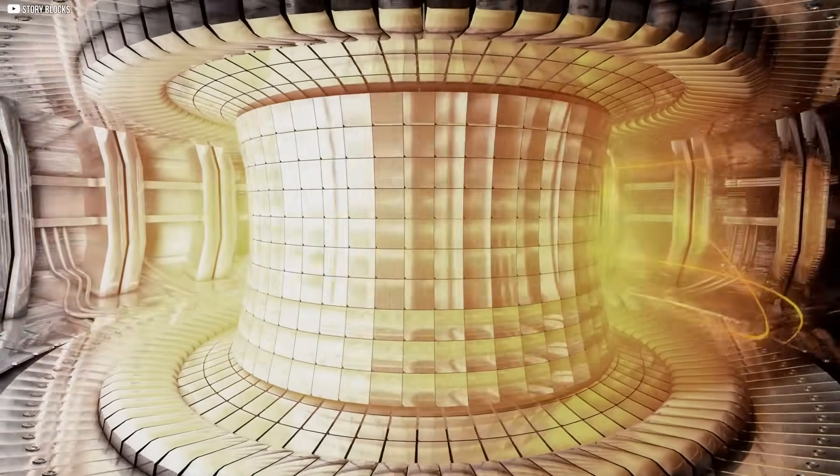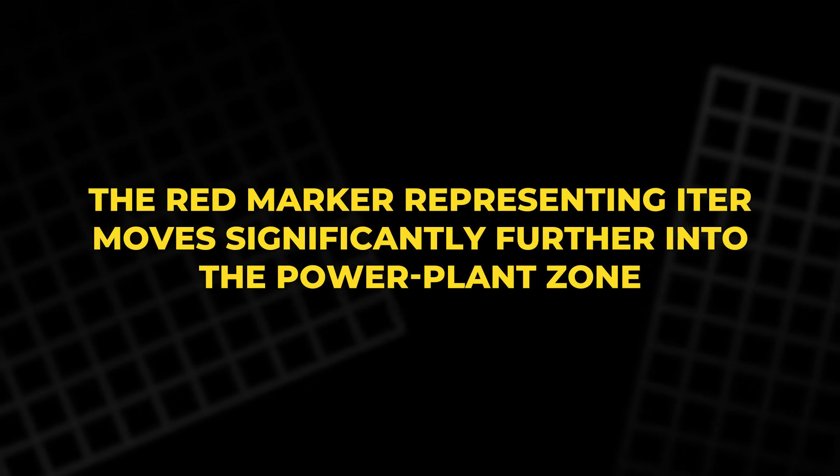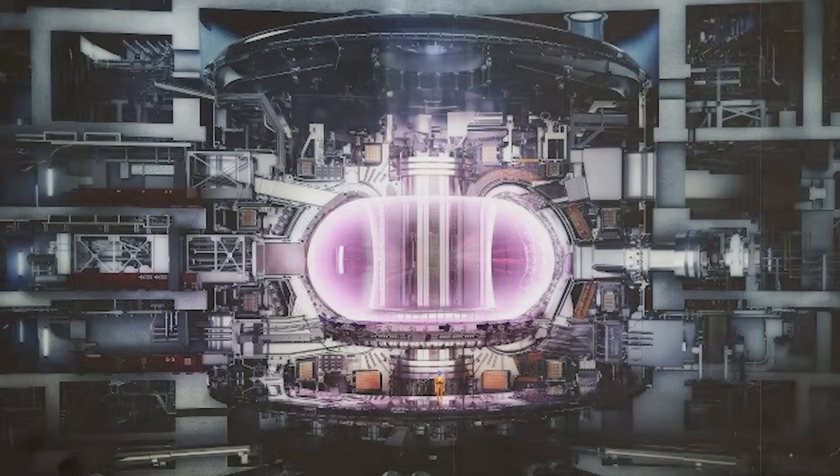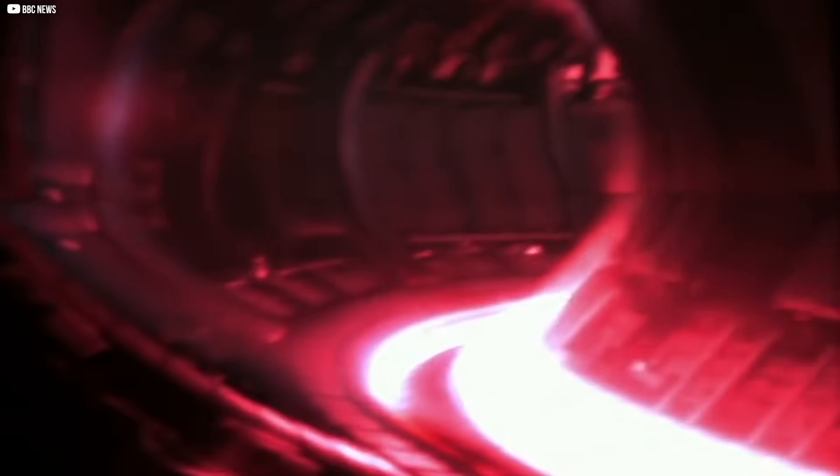If the ion density doubles, so does the triple product. On a logarithmic scale, that shift isn't small. The red marker representing ITER moves significantly further into the power plant zone. Not barely viable, firmly inside. That's the difference this discovery makes. It doesn't just improve performance, it shifts the outcome. It takes reactors that were barely break even and pushes them into surplus territory.